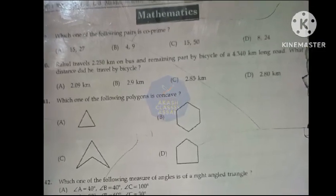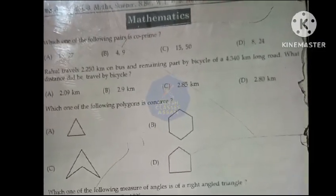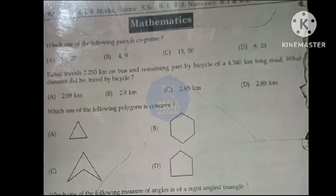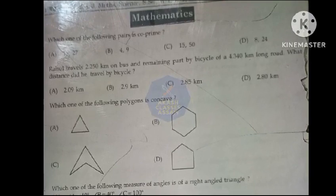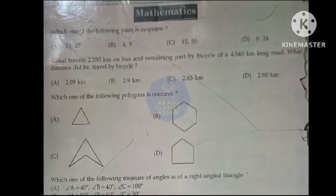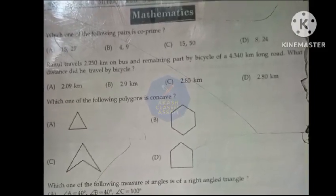Which one of the following pairs is co-prime? Option B. Rahul travels 2.250 km on bus and remaining part by bicycle of a 4.340 km long road. What distance did he travel by bicycle?